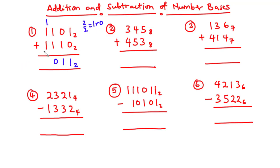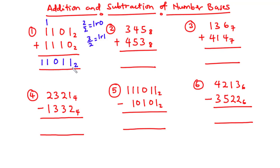Now 1 plus 1 is 2, 2 plus 1 is 3. Because 3 is greater than or equal to 2, we divide 3 by base 2: that gives 1 remainder 1. We write the remainder and carry the 1. Then 1 plus 0 plus 0 is still 1. Our final answer is 11011 base 2.